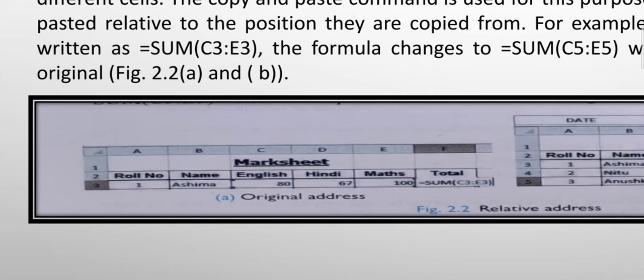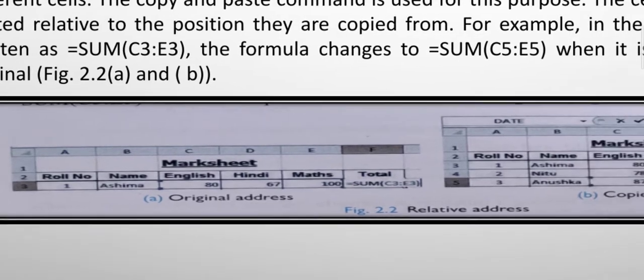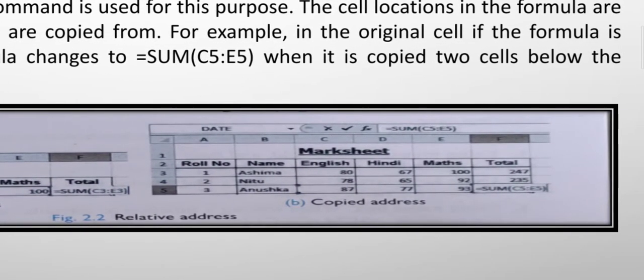C3 to E3 means C3 is the C column and E3 is the row. C3 se lekar E3 tak humne likha kyunki wahan pe colon diya hua. Poora jo teen column hai, C se lekar E tak, three wala, usko humne liya colon se. This is the formula of sum to calculate the sum of anything.